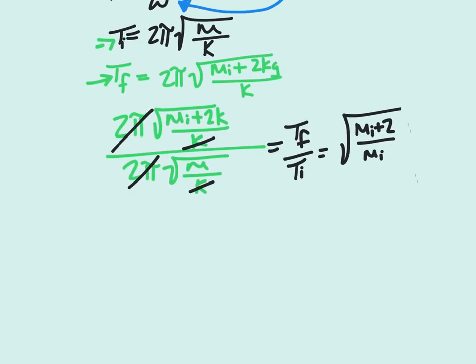So rearranging the equation, we would have that our initial mass equals our 2 kilograms divided by our T_f divided by T_i squared minus 1.